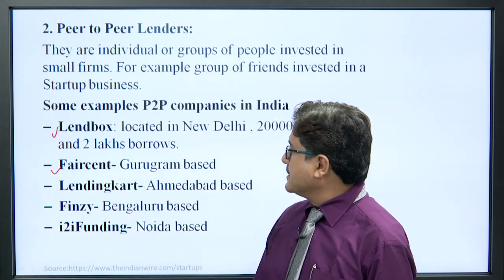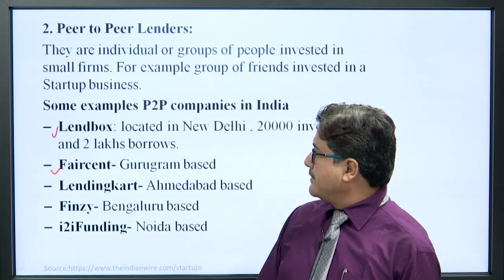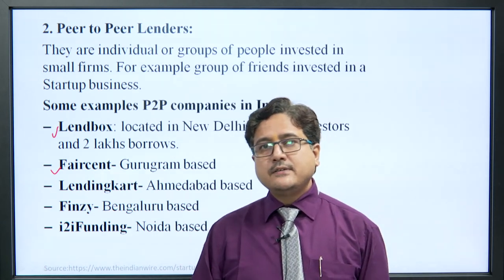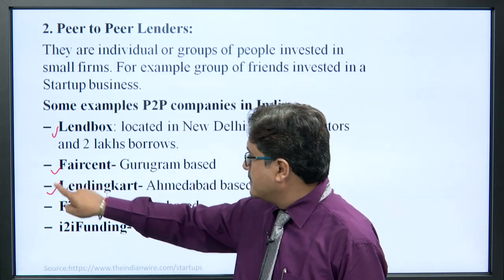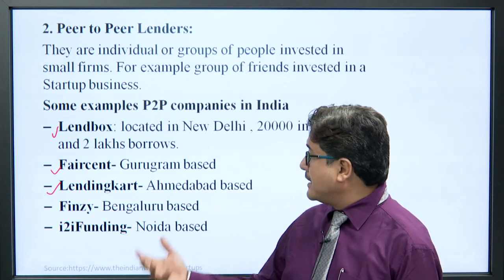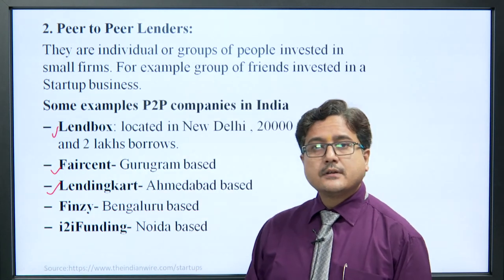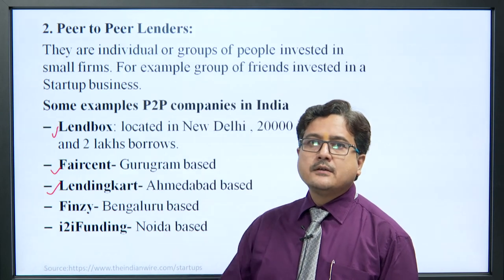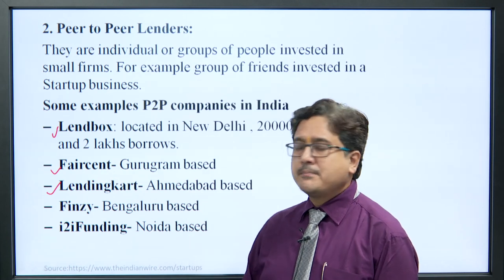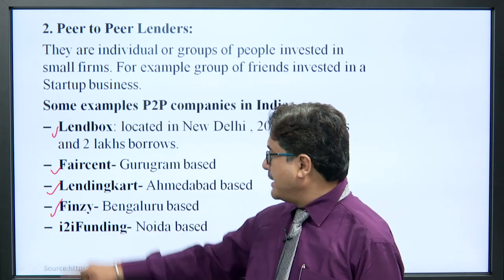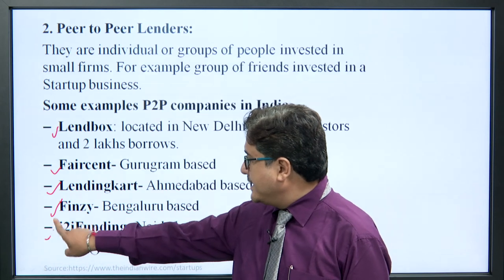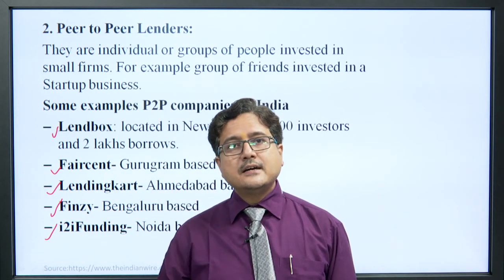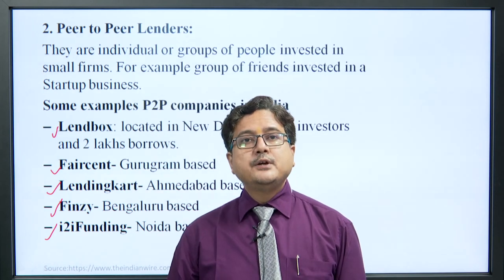They are examples of P2P companies. First is LandBox, located in New Delhi, having 20,000 investors and 2 lakh borrowers — that means investors are one-tenth of the borrowers. The main role is managing the fund of the investors, collecting the fund and giving loans to borrowers. Second is FairSent, based in Gurugram. Third is LendingKart, an Ahmedabad-based company. Next is French, Bengaluru-based, and I2I Funding, NOIDA-based. These are the second type — P2P lenders.